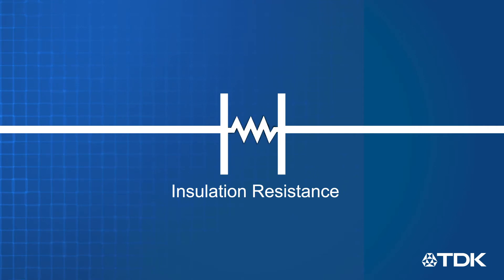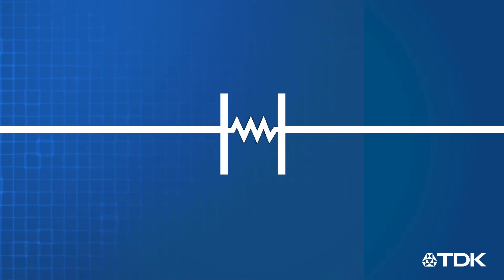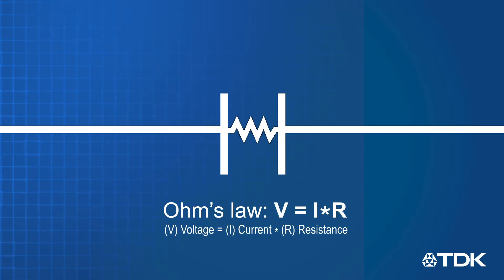IR is determined by measuring the leakage current. Knowing the leakage current and applied voltage, the insulation resistance can be calculated based on Ohm's Law.